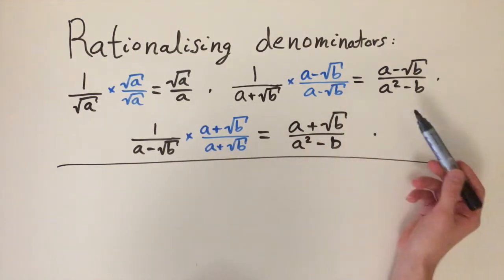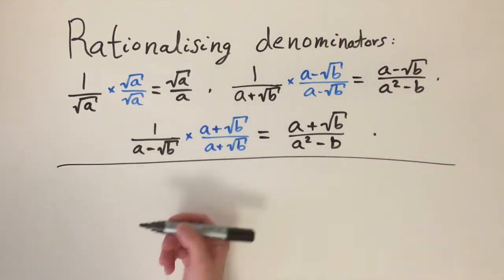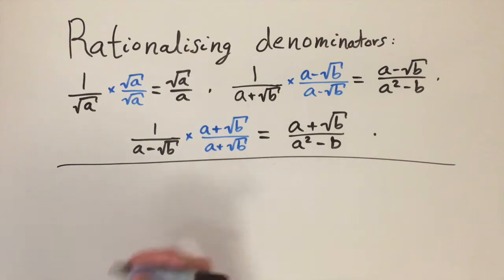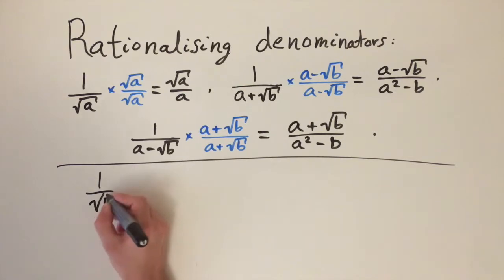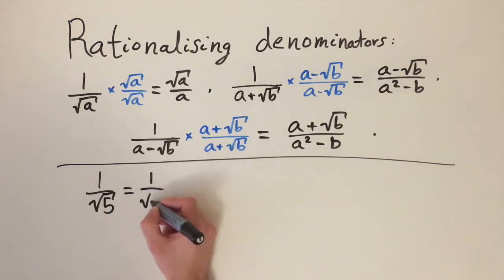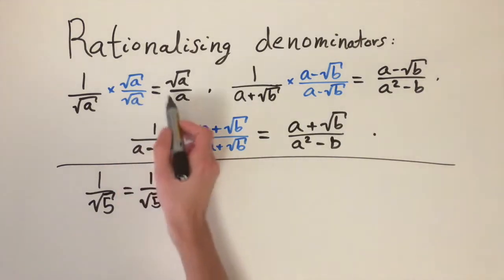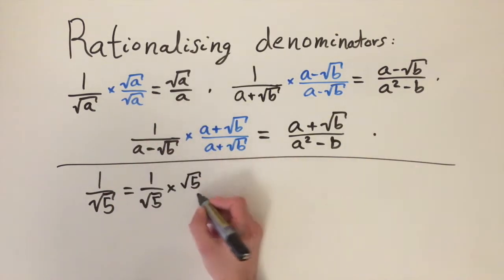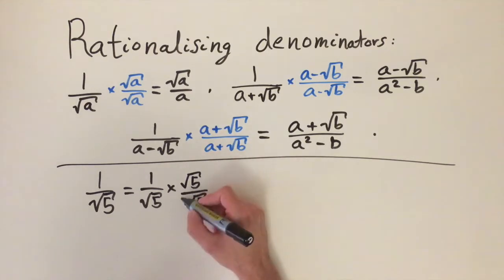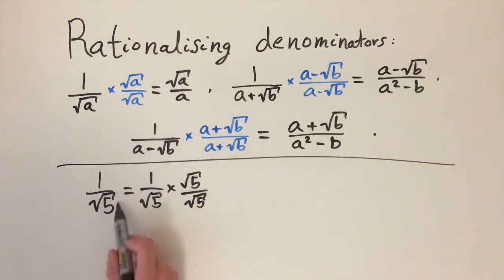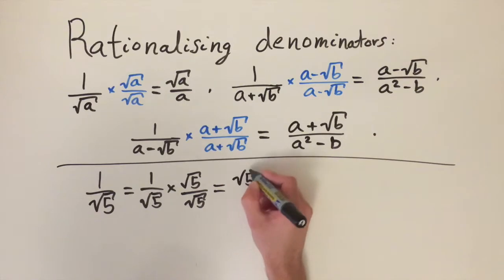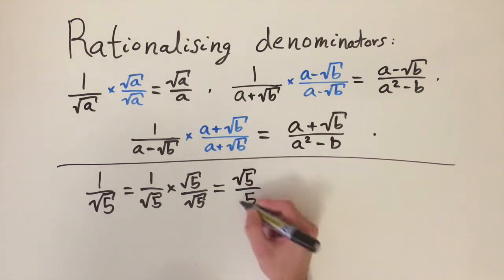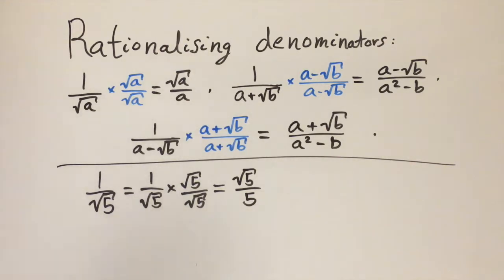What's important is that you remember the method of how to do this — I don't expect people to memorize the formulas. So let's go through some examples. First, 1 divided by the square root of 5. We multiply top and bottom by the square root of 5. This cancels out on the bottom, so we haven't changed the value of the fraction. What we get is the square root of 5 on the numerator divided by 5, and this is the rationalized form.